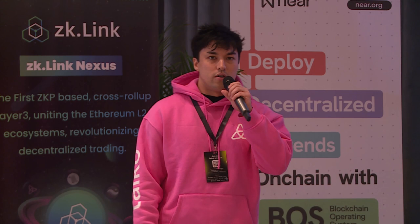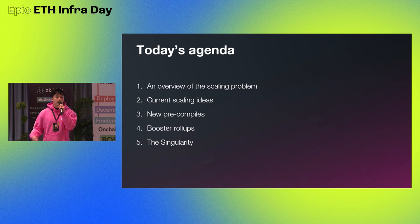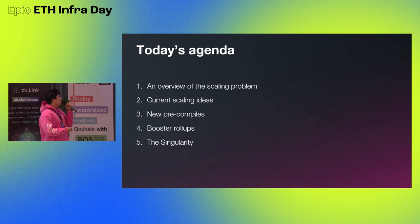First, for the more beginners in the audience, we'll give an overview of the scaling problem. Then we'll talk about some current scaling ideas that L2s are working on to address the scaling problem. Then we'll talk about new precompiles that we are suggesting to introduce — we want to get feedback on those — which will enable a new idea called booster rollups. And then we'll briefly talk about an idea called the singularity.